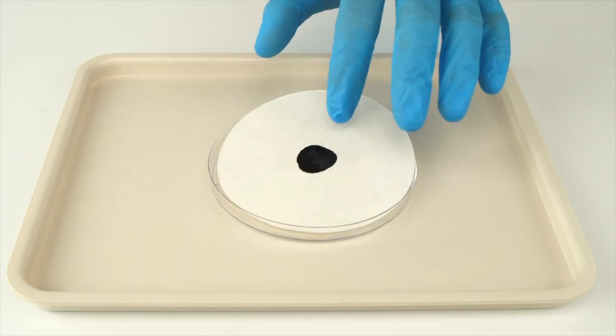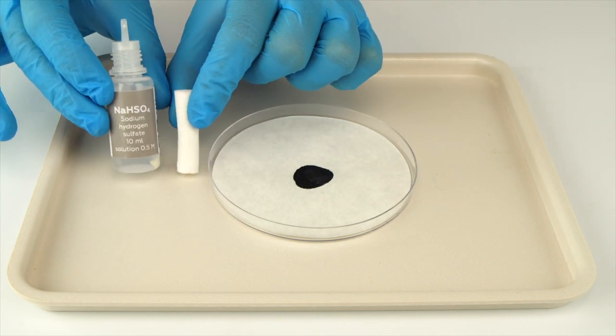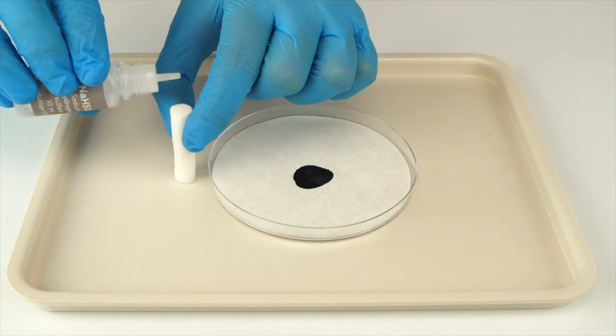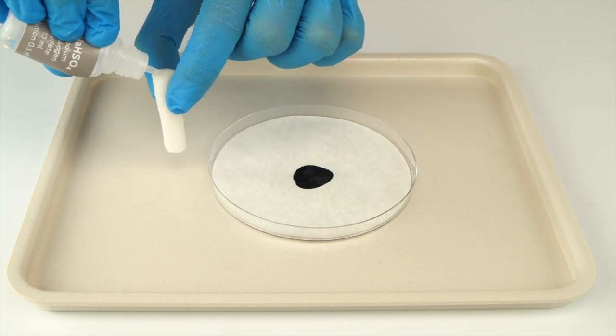Put the filter paper in the petri dish. Now, take the cotton cylinder and drip sodium hydrogen sulfate solution onto one end. Keep going until the solution starts dripping from the other end of the cylinder.